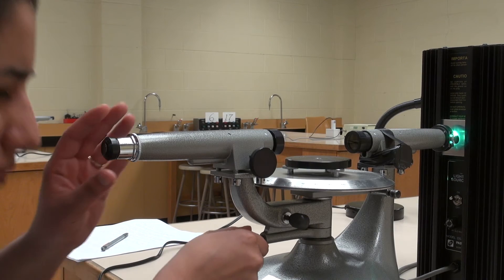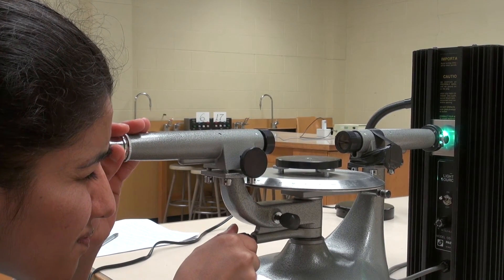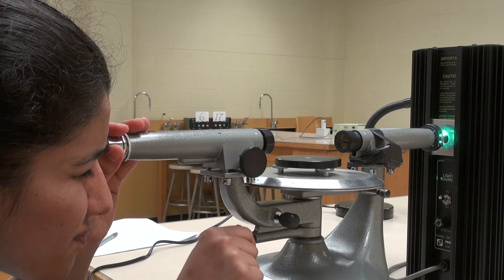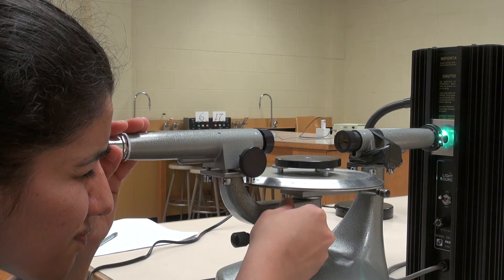Align the telescope and the collimator so that the telescope crosshairs exactly coincide with the undeviated image of the slit. The tangent screw may be used for fine adjustment.